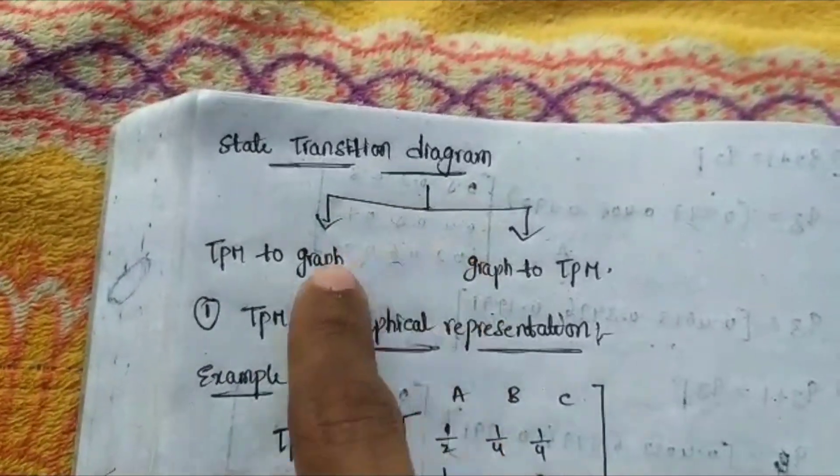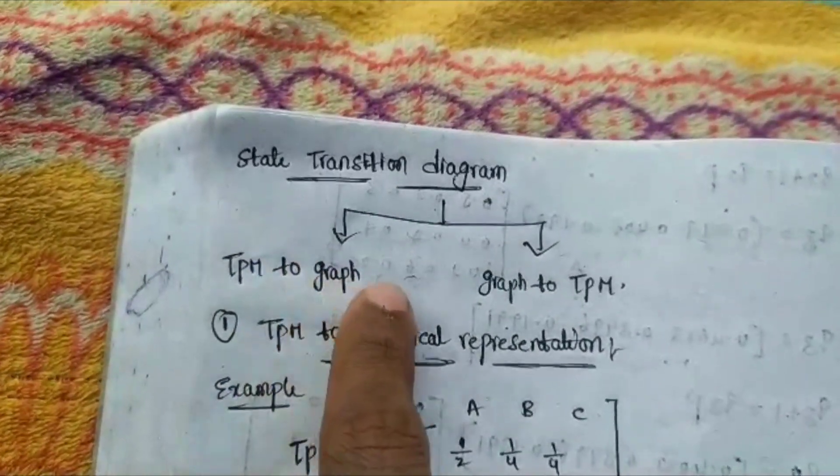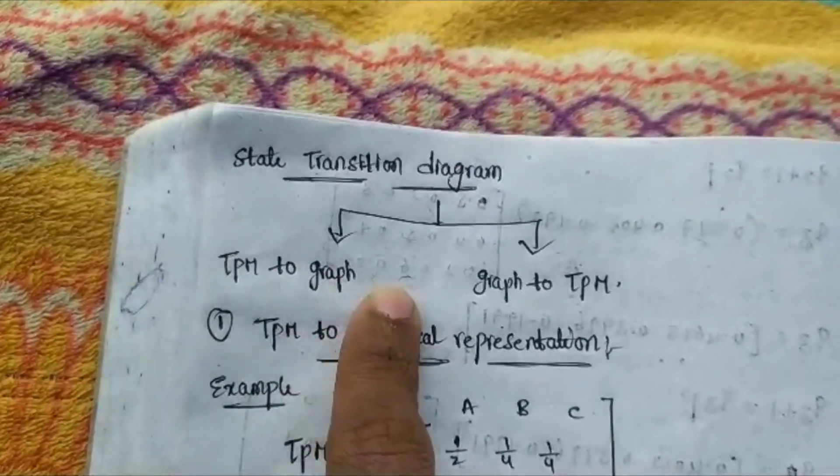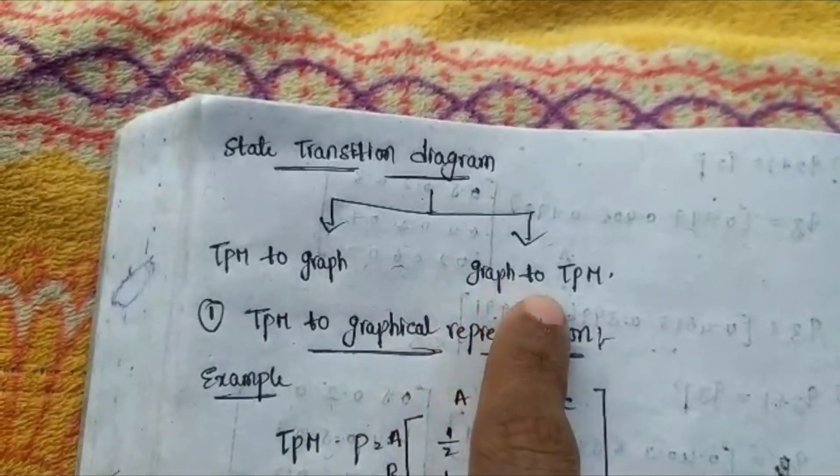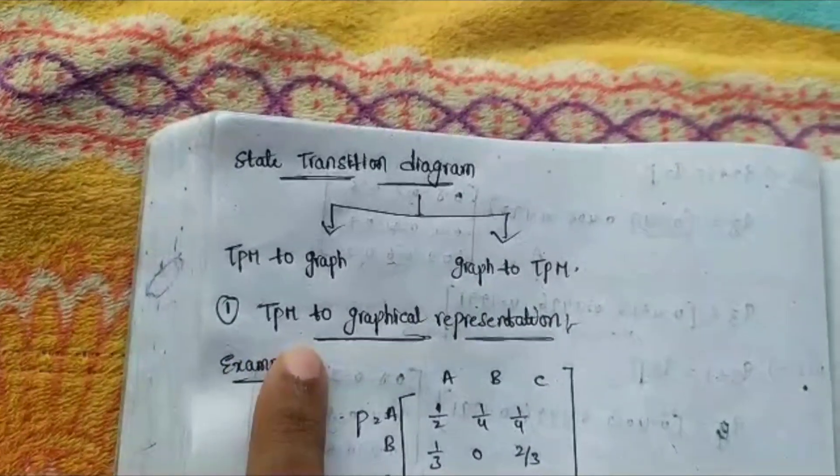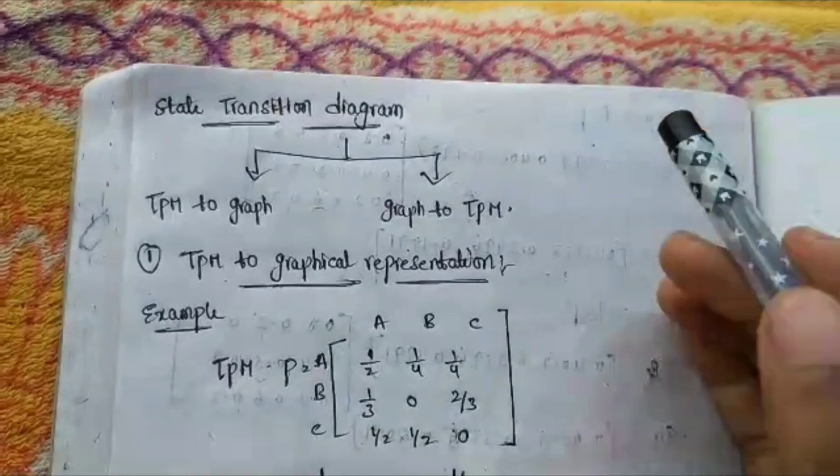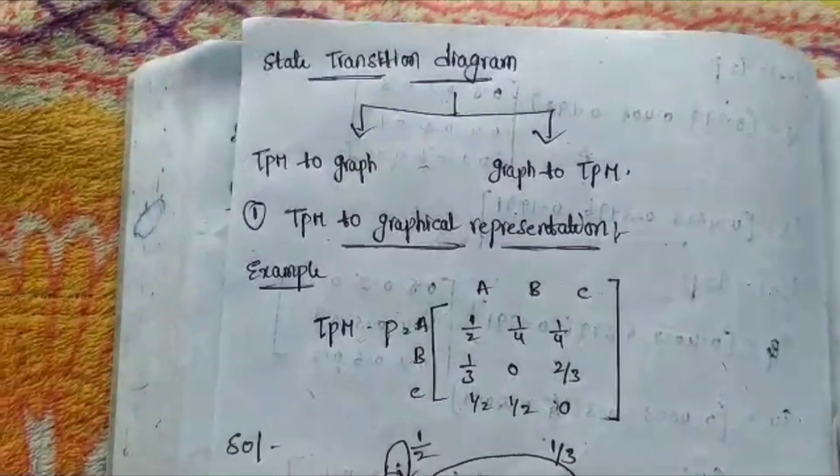In state transition diagrams, there are two types. First type is converting the transition probability matrix into graphical representation, and second one is graphical representation into transition probability matrix.